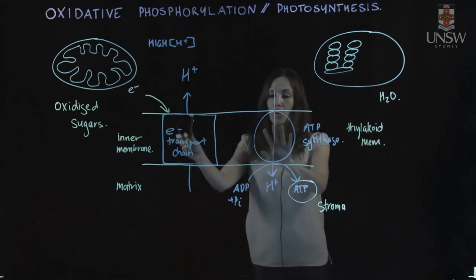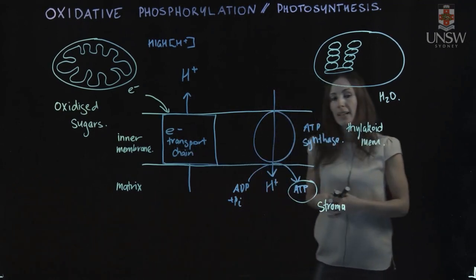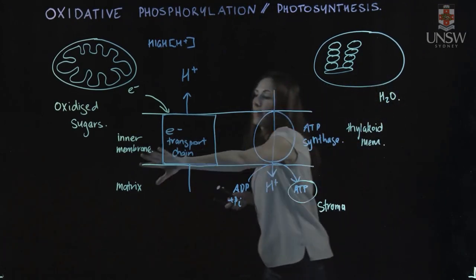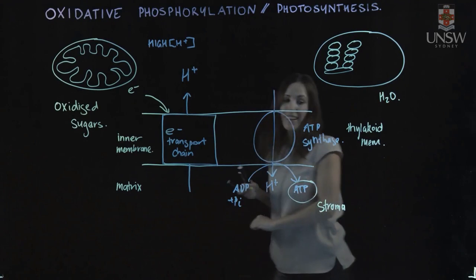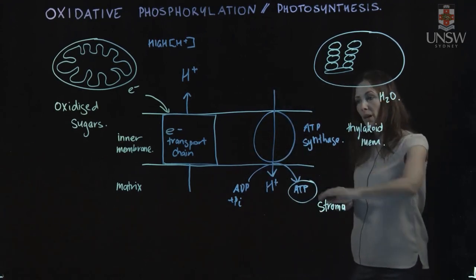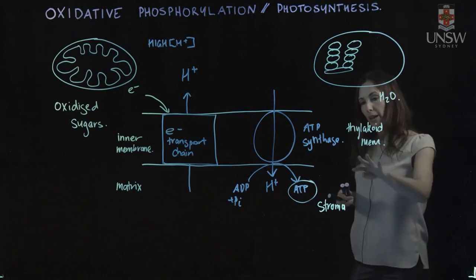So that allows us to see what's similar between these two processes of ATP generation, and what's different about them as to where the electrons come from, what the ATP is used for, and the different locations where it occurs.